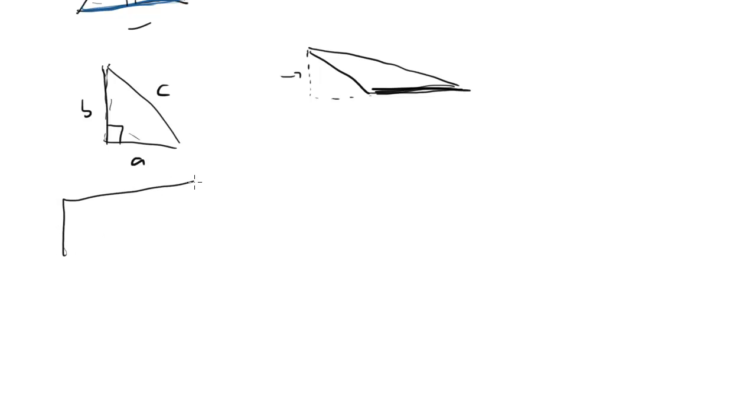For rectangles, the area is pretty simple - it's length times width. The trick might be getting those lengths and widths in the first place. For a square, it's equally straightforward, it's just side squared. Just side times side, pretty much length times width, it just happens that length and width are equal.